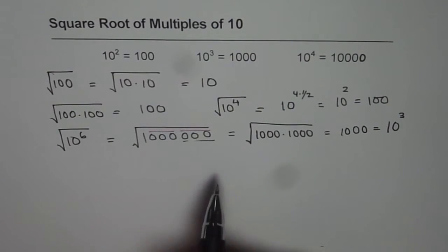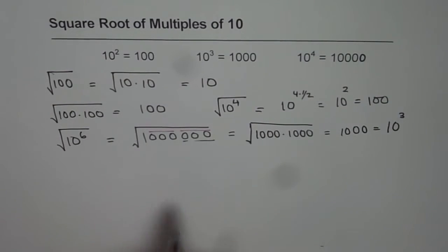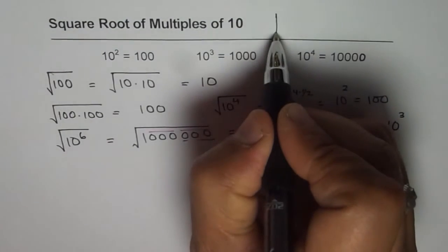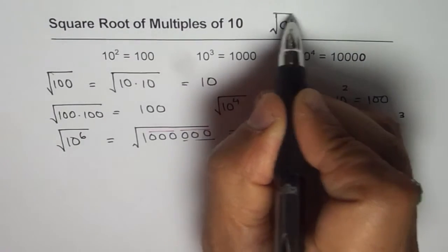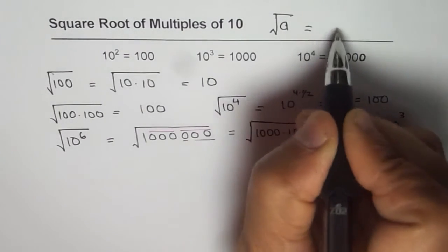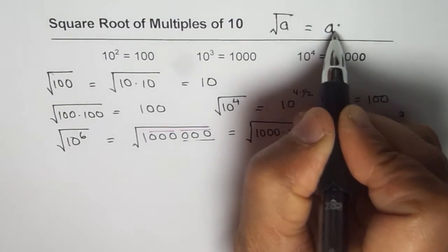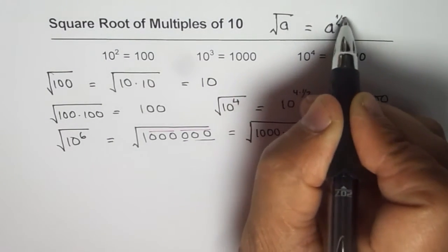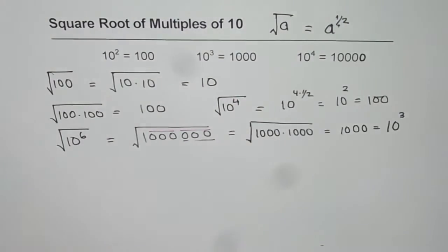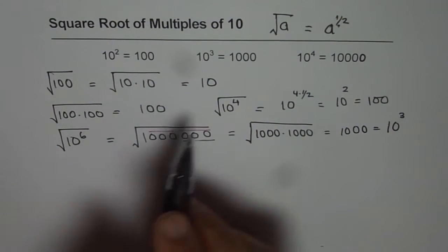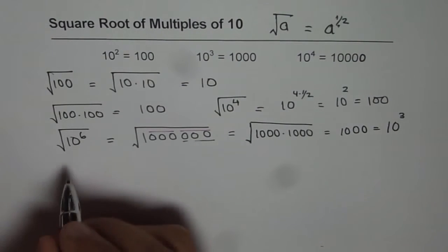So what we have learned here is that the square root of any number given in exponent form means the power of that number should be halved. That is what we have learned. So let's extend this to powers of 10 first.